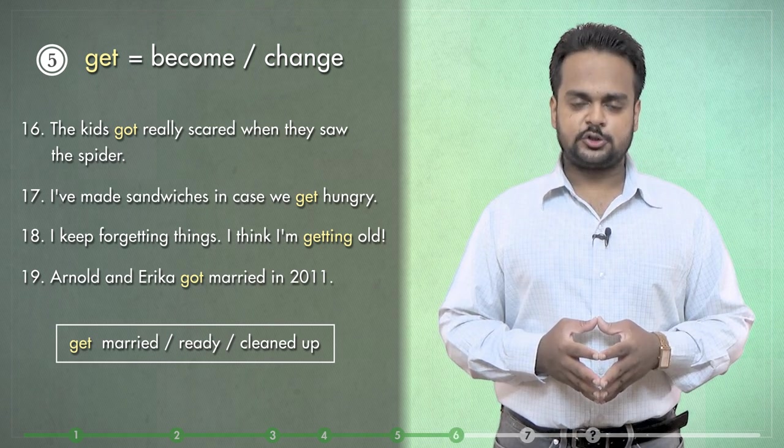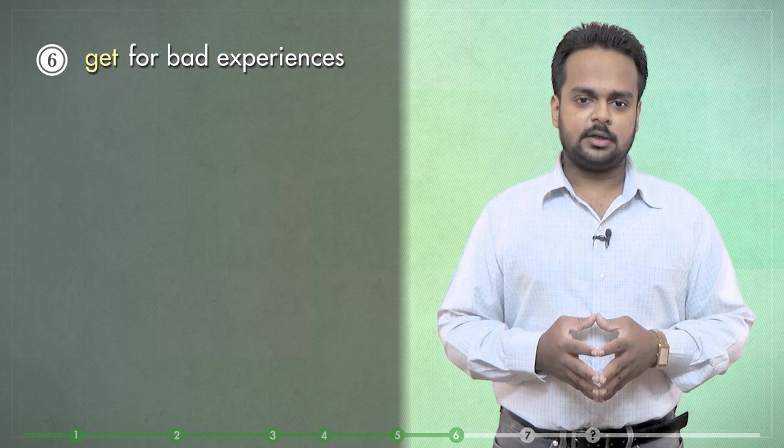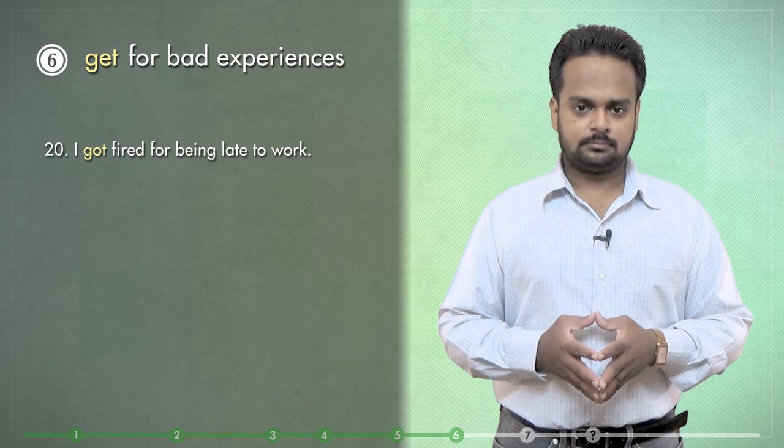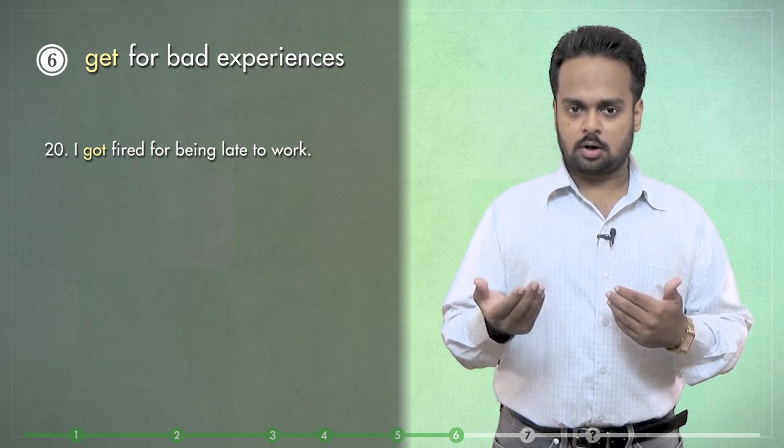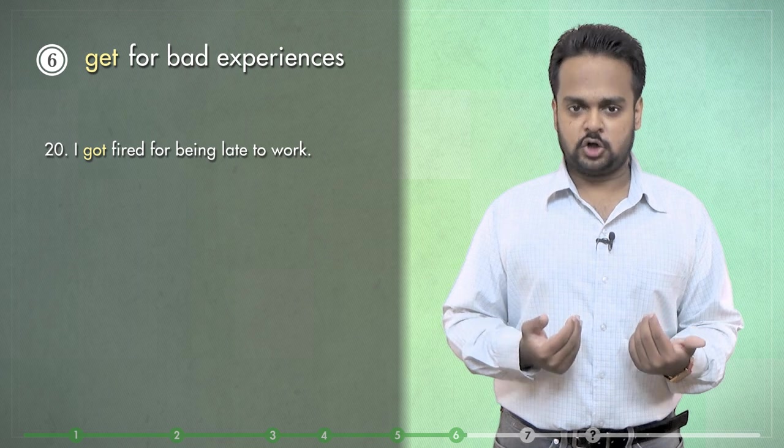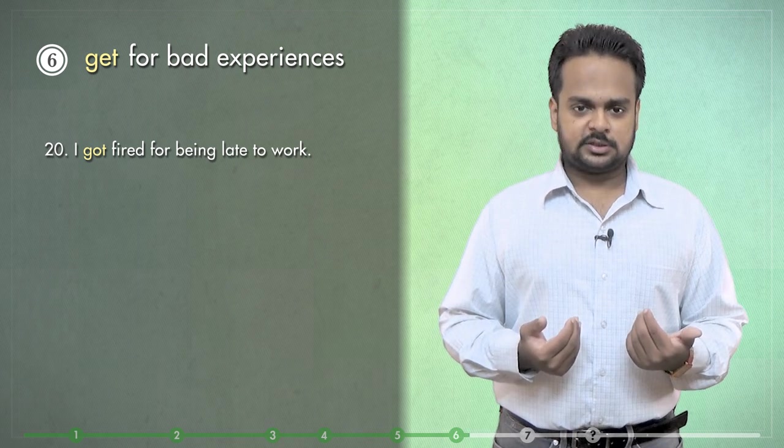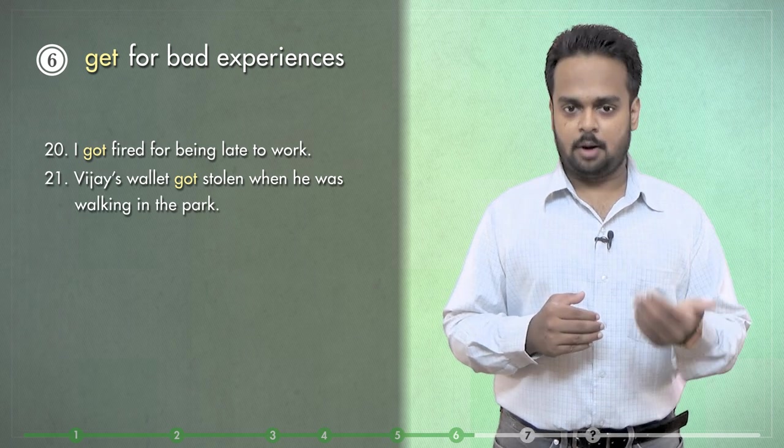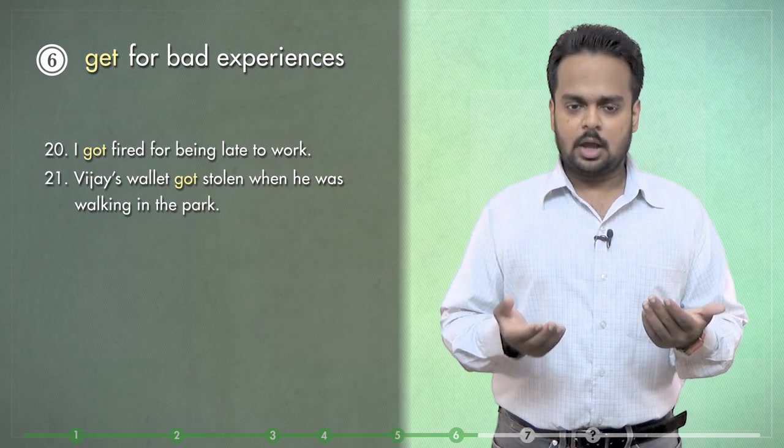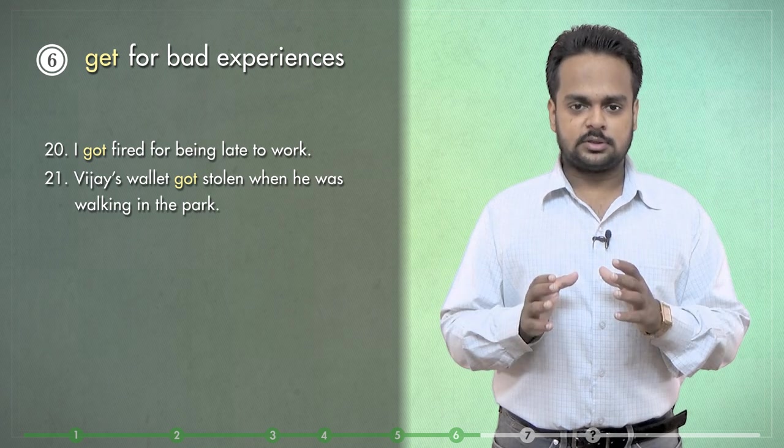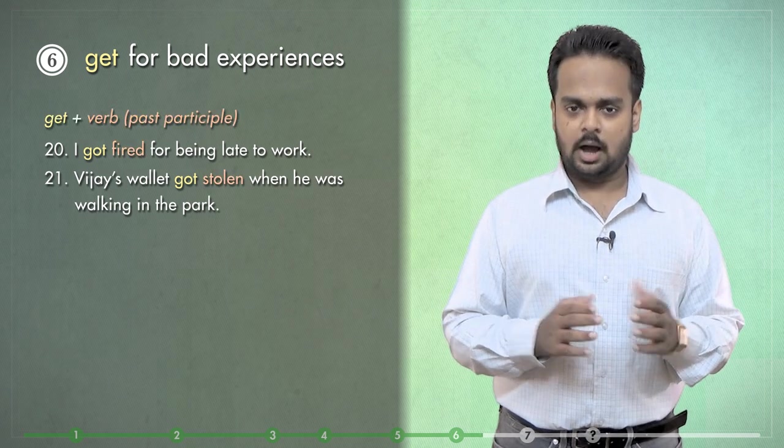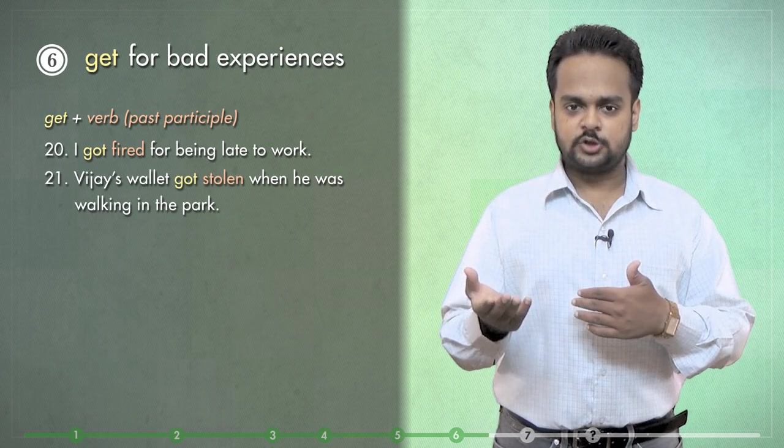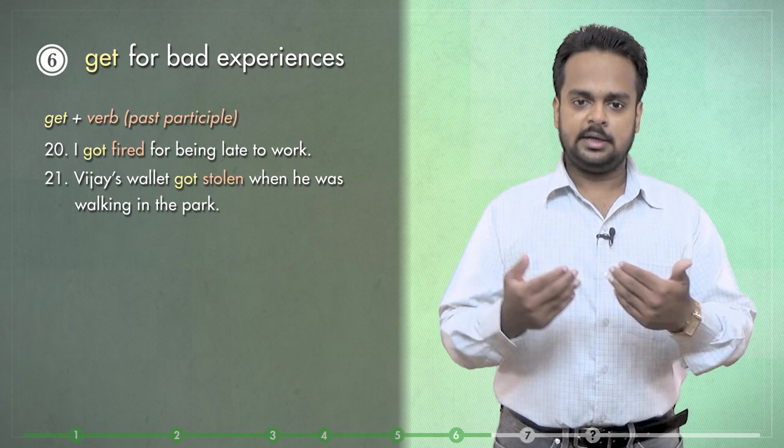Use number six is to talk about bad experiences or events. For example, I got fired for being late to work. That means I went late to work and my boss fired me – that is, I lost my job. The next example is similar – Vijay's wallet got stolen when he was walking in the park. So maybe he got pickpocketed. Notice that both of these sentences are in the passive voice – I got fired means my boss fired me. His wallet got stolen means somebody stole his wallet.